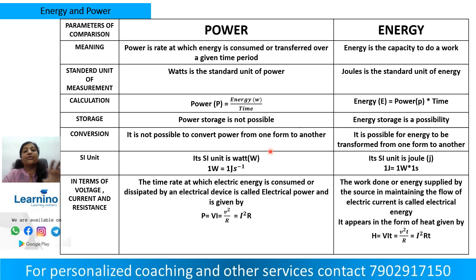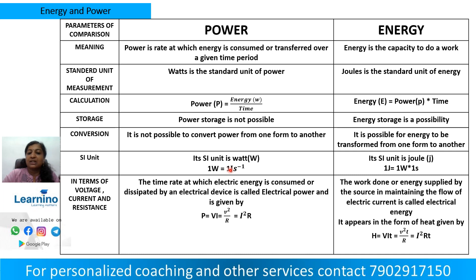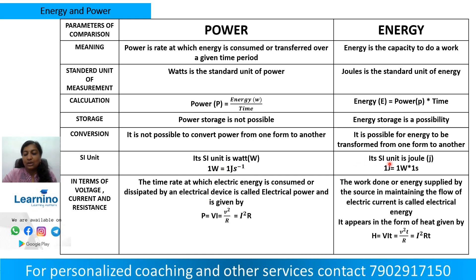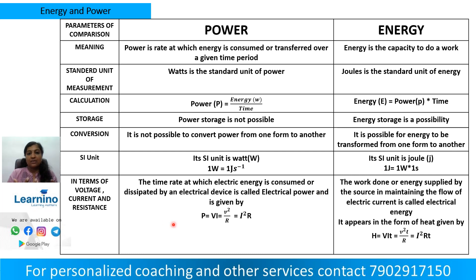Energy can be transformed from one form to another. One watt is equal to one joule per second — that is the SI unit relationship between joules and watts.